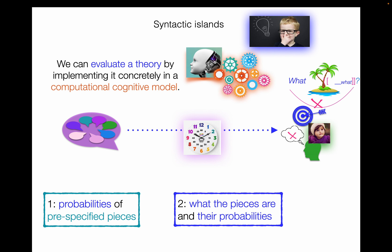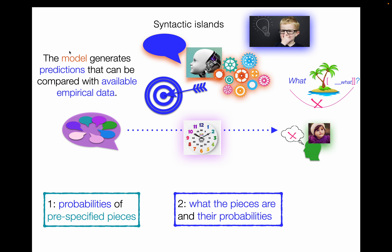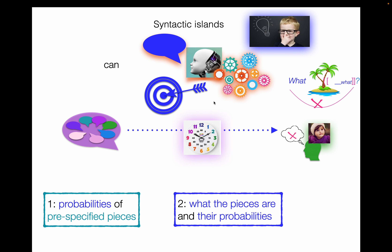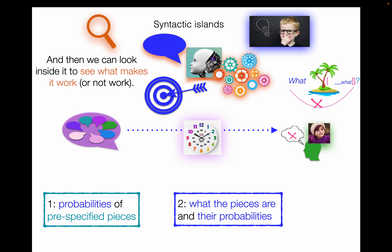For both of these theories, we can evaluate them by implementing each concretely in a computational cognitive model. The model that we build is going to generate predictions that can be compared with available empirical data — like our target behaviors, target judgments, and target preferences for different interpretations. We can also look inside the model to see what makes it work, or not work, if it doesn't work right.